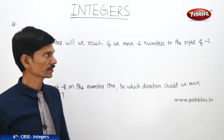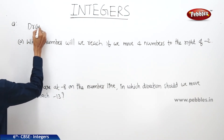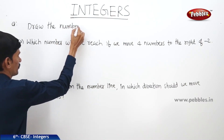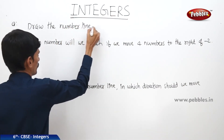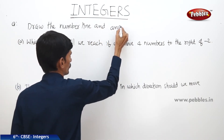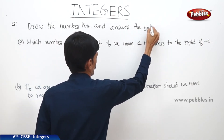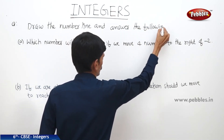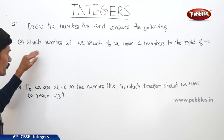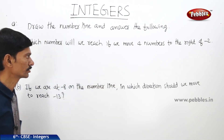Now let us see the next question: draw the number line and answer the following. The first question is: which number will we reach if we move 4 numbers to the right of minus 2?